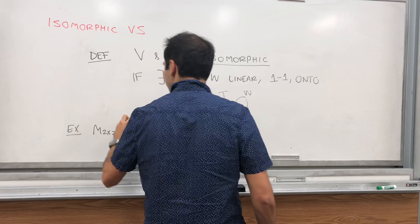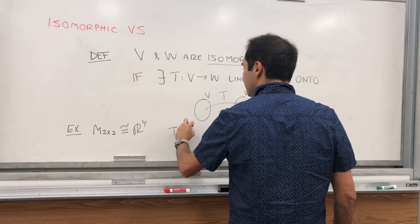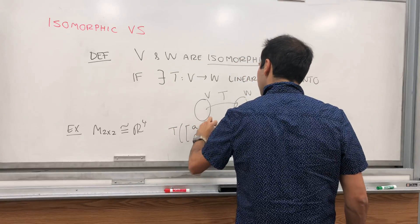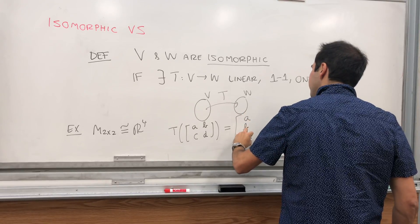So usually you write this equal with a similar because you can just have T take A, B, C, D as its input and just spits out the vector A, B, C, D.